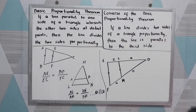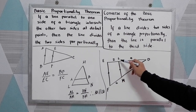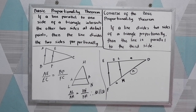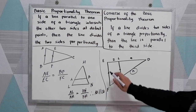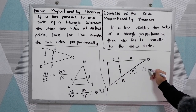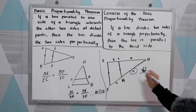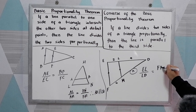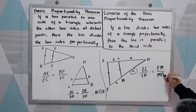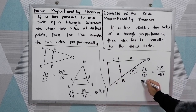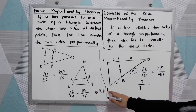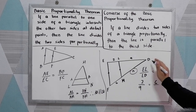Now, to apply the theorems, let's say we have our illustration in the given. EF is parallel to LM, and we're going to find the value of N. Applying our proportionality theorem, we have EL over LD equals FM over MD. The measure of EL is 2, LD is 9, FM is 6, and MD is N.